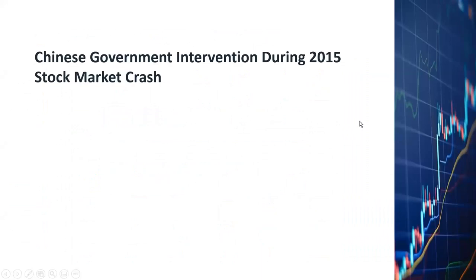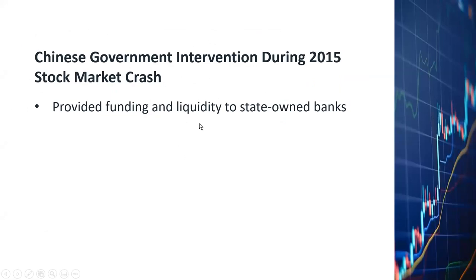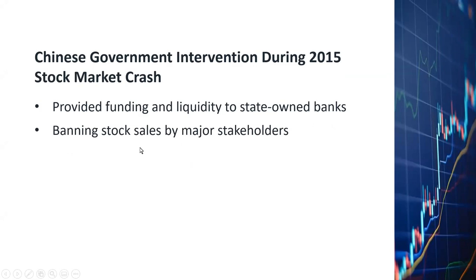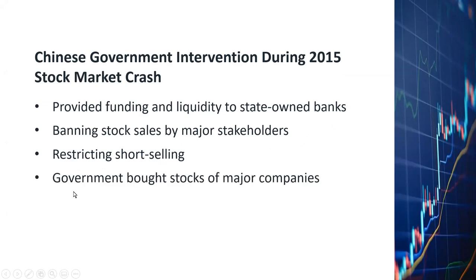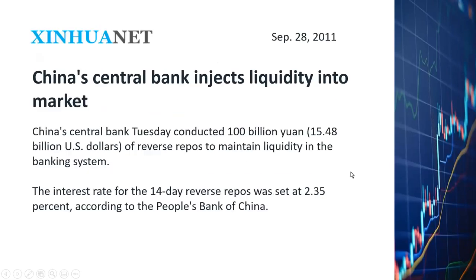What did the Chinese government do in 2015 to try to stabilize the market? They provided funding and liquidity to state-owned banks, prohibited stock sales by major shareholders, restricted short selling, and eventually started buying stocks to shore up major companies. What's happening today? As of September 28th, the central bank has already started injecting liquidity into the market, similar to what they did in 2015. Let's hope the Chinese government will do more to stabilize their markets.